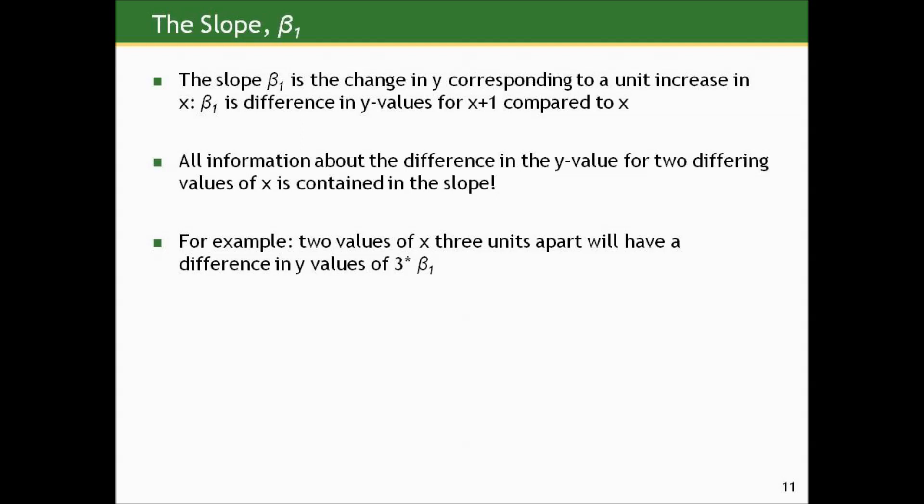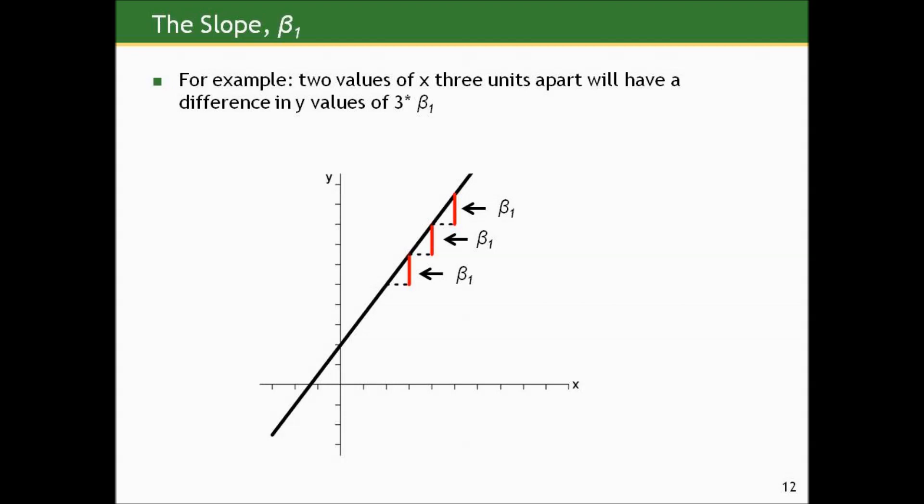All of the information about the difference in the y value for two differing values of x is contained in the slope, even if we want to compare y values for two values of x that differ by more than one. Suppose I wanted to estimate the difference in y values for two values of x separated by three units. The collective difference in y is β1 plus β1 plus β1, or three times β1. Multiples of β1 represent differences in y for more than one unit or less than one unit differences in x.